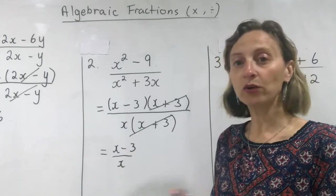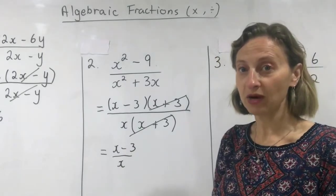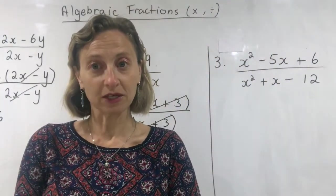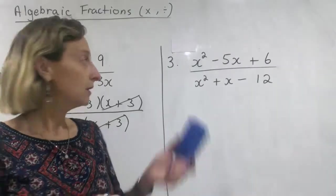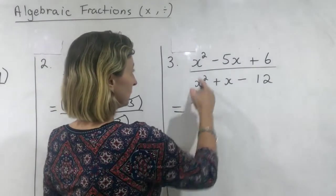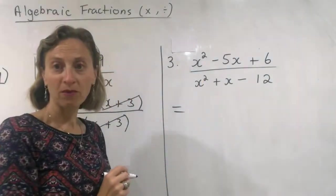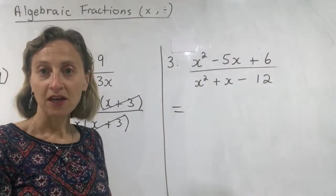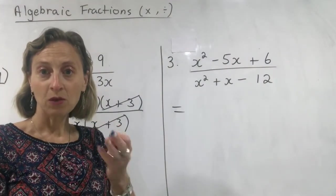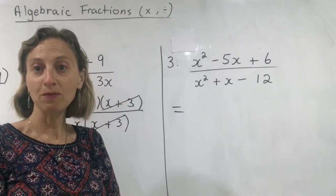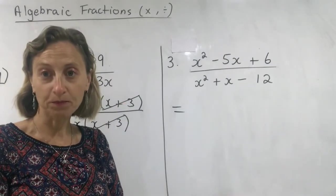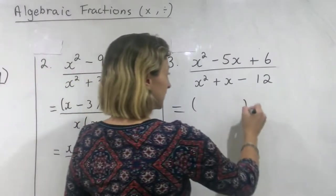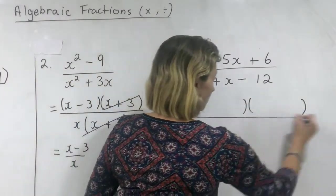These are quite simple as long as you know how to factorise. Most people have a problem with these questions because they actually don't know how to factorise. Question number three. On the top there are no common factors; on the bottom there are no common factors. These are both three-term expressions with a one in front of the x squared, which makes them a monic trinomial, so we do both as a monic trinomial.